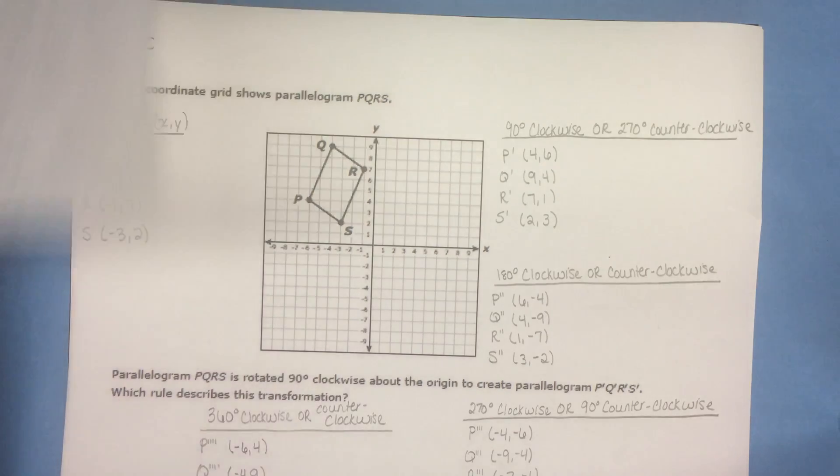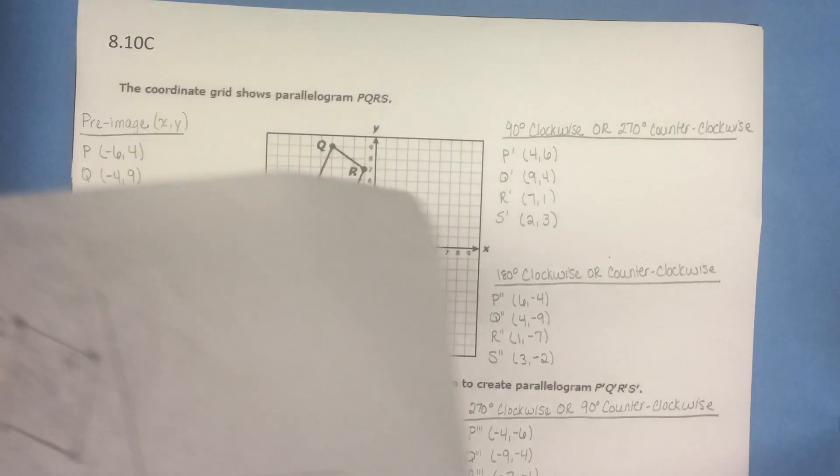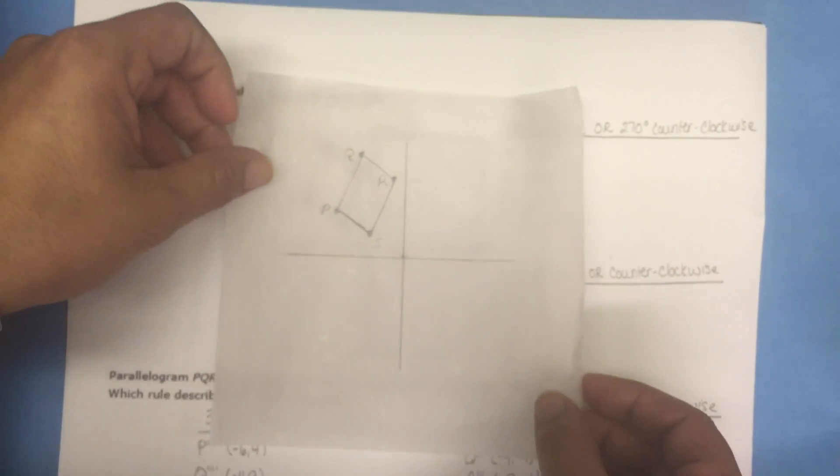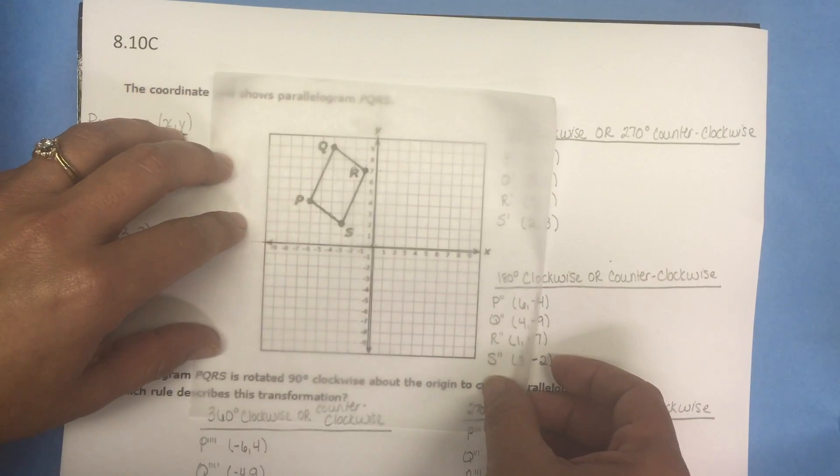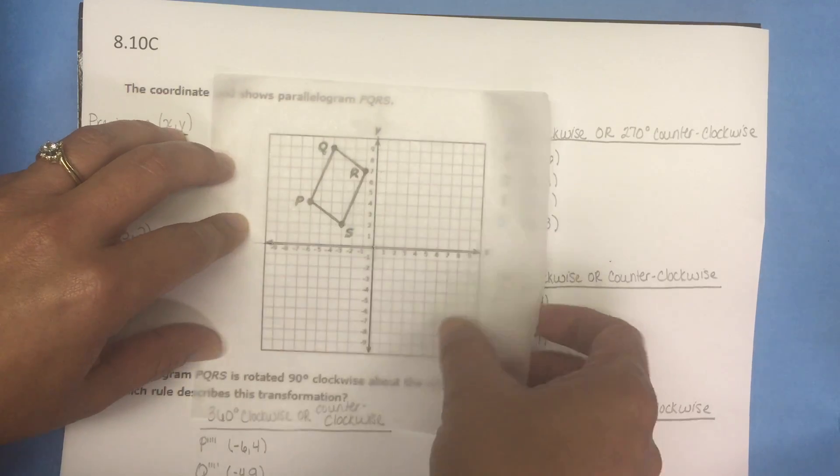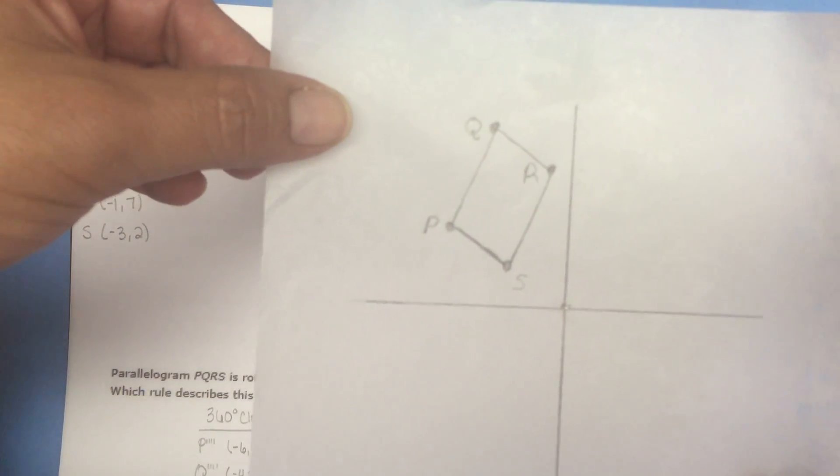What I like to do when I'm first introducing rotations to students is to let them use patty paper. So I have taken a plain piece of patty paper and I traced the x and the y axis as well as the parallelogram and I labeled the vertices of the parallelogram.